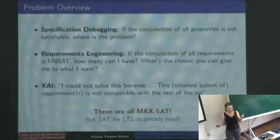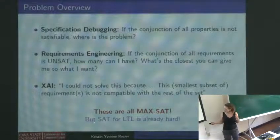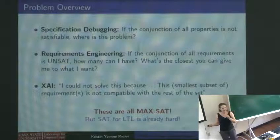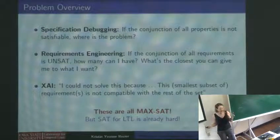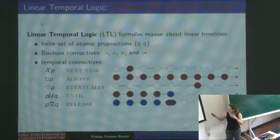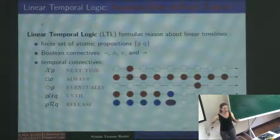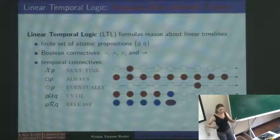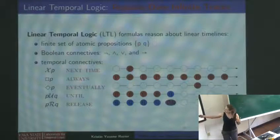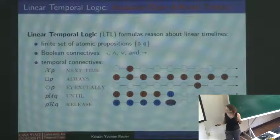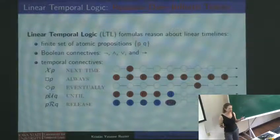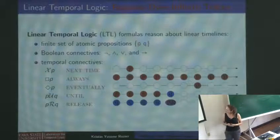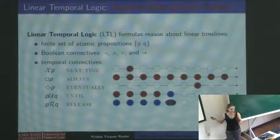One big caveat: SAT — just one SAT call — is already very hard for LTL. So now we want to do MaxSat. To make the problem more manageable and work toward MaxSat, we consider variations. LTL reasons over infinite traces, which makes obvious MaxSat encodings harder. But there are variations that don't have this property.